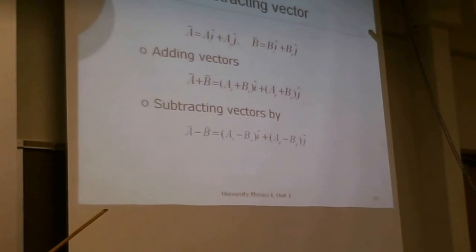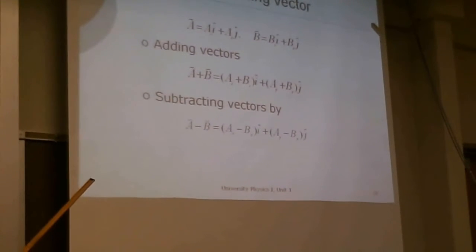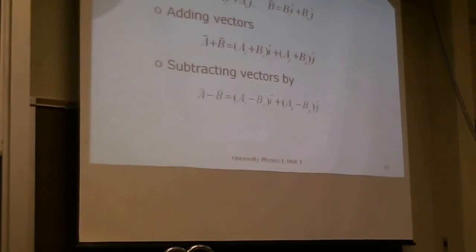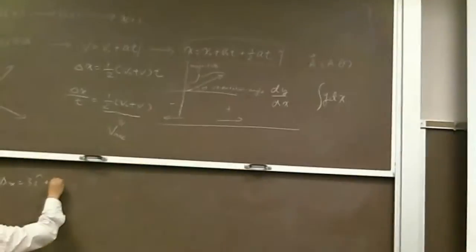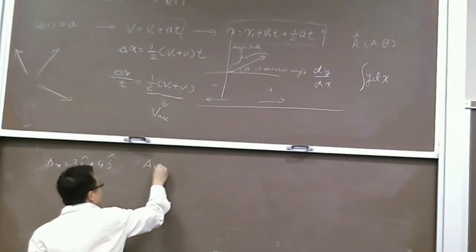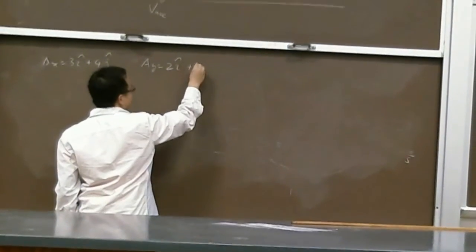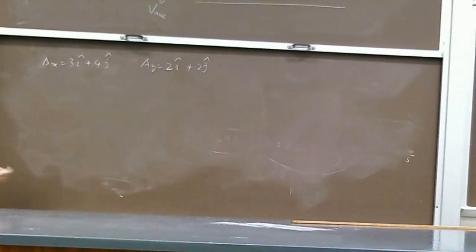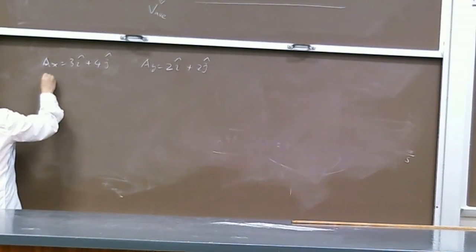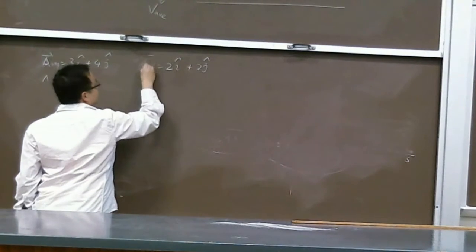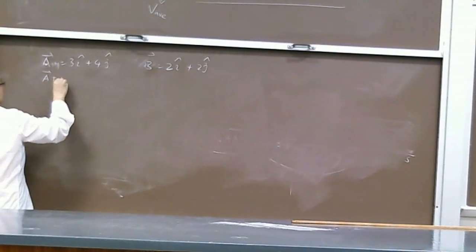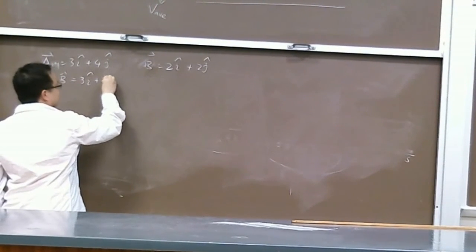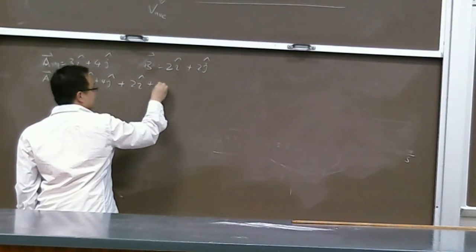In fact, this follows from the normal algebraic law. Think about you have two vectors: A equals 3 i-cap plus 4 j-cap, B equals 2 i-cap plus 2 j-cap. If you want to add A vector plus B vector, let's just put them together: 3 i-cap plus 4 j-cap plus 2 i-cap plus 2 j-cap.